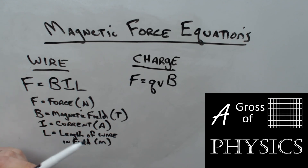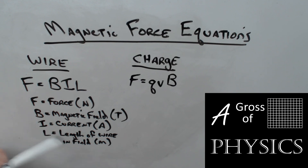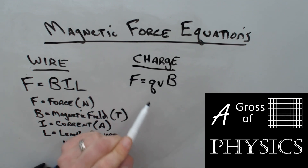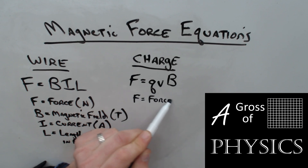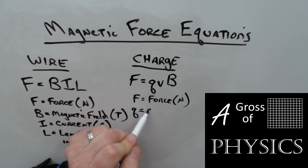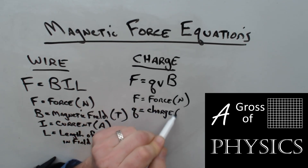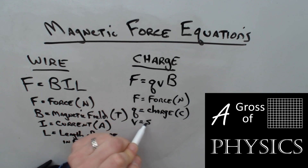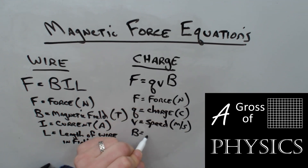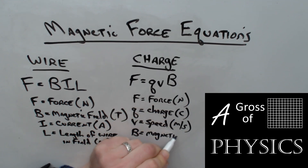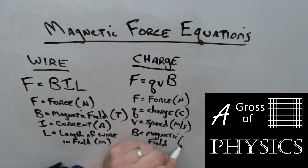The length of the wire in the field needs to be the section that is perpendicular. We can loop the wire to have a stronger force because we have more length in the field. For the charge equation, Q is charge in coulombs, V is speed in meters per second, and B is the magnetic field in teslas.